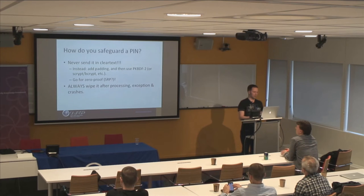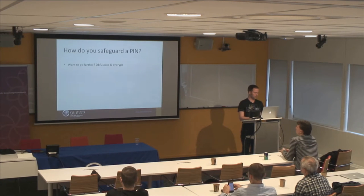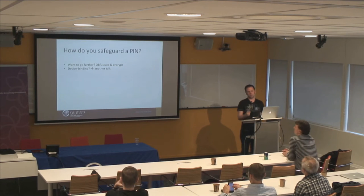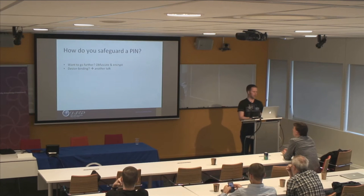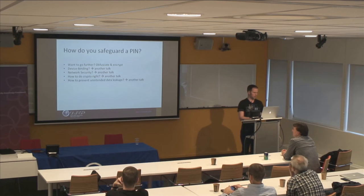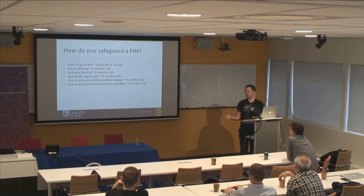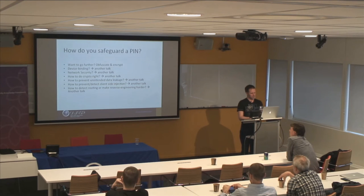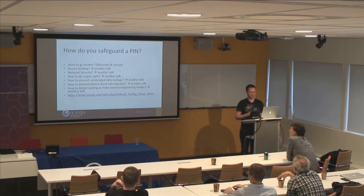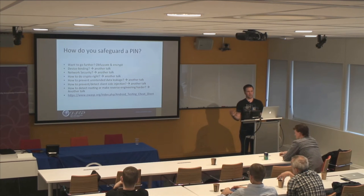Always wipe it after processing — exception handling included. There are a bunch of other things you can do: bind your authentication information to the device like a PIN padding, do your network security right, do your crypto right — not do it yourself — prevent unintended data leakage, prevent client-side injection. There are many talks already given during AppSec sessions which you should check out. Same holds for rooting or making reverse engineering harder. OWASP already has lots of this in its Android testing cheat sheet. Go there, learn from it, apply more controls if necessary, and add stuff because it's not complete — we all learn.